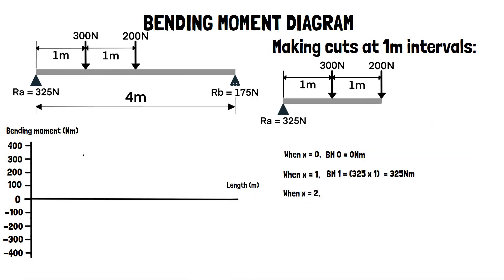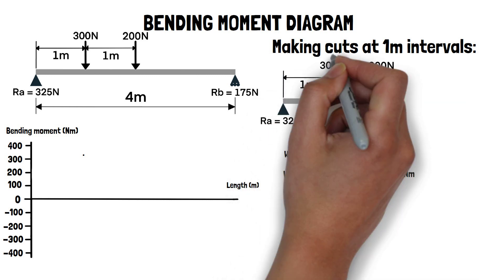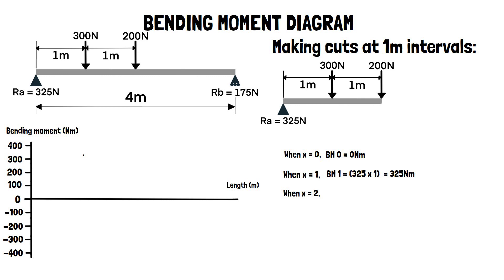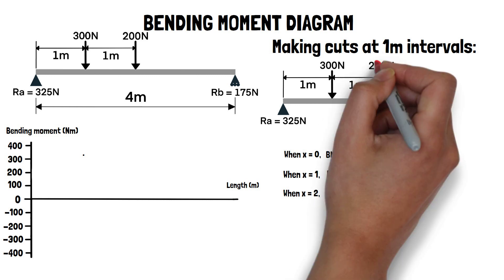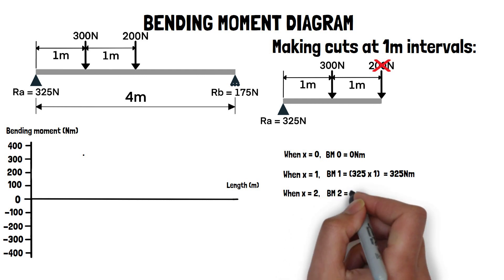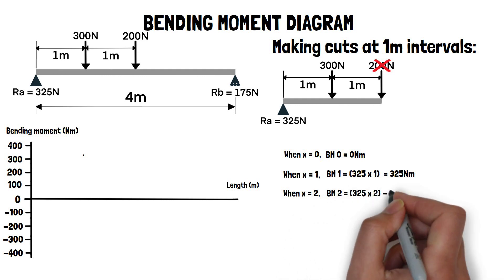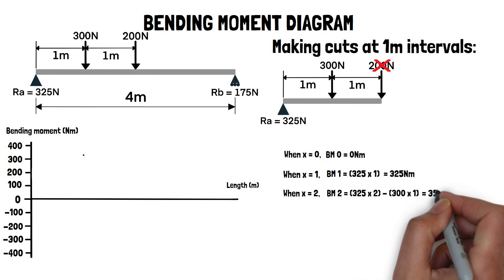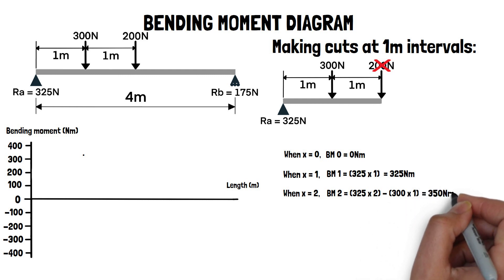When x equals two, the reaction force RA now has a distance of two metres, and the distance of the 300 newton point load becomes one metre. The introduction of a 200 newton point load will not be considered as it has a distance of zero metres. So our bending moment is calculated by 325 times two, minus 300 times one, which equals 350 newton metres.